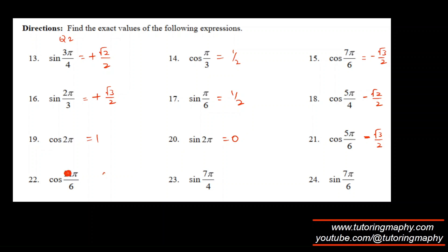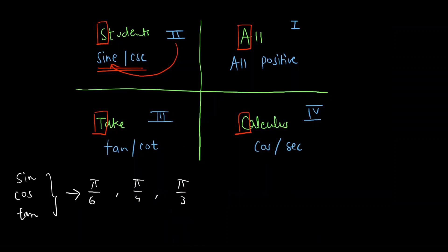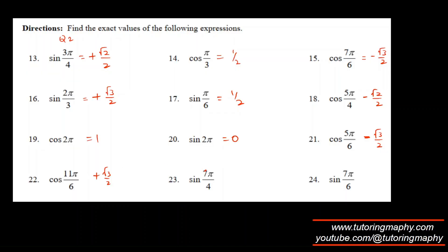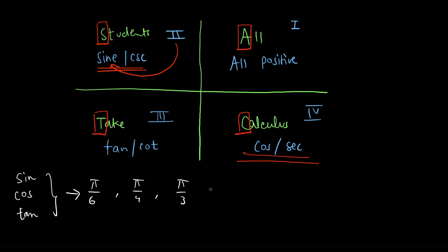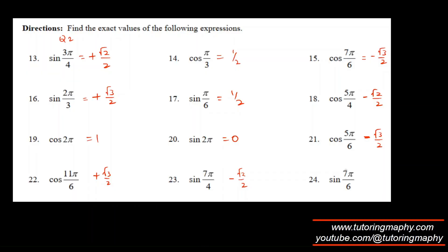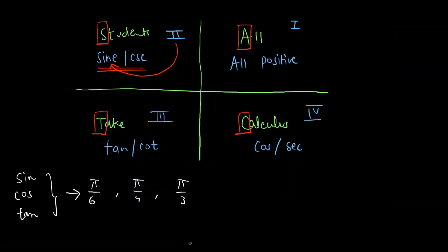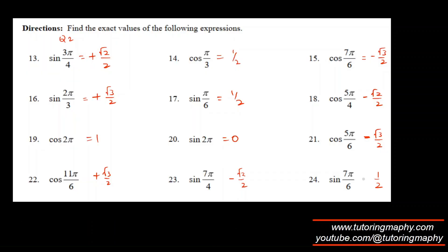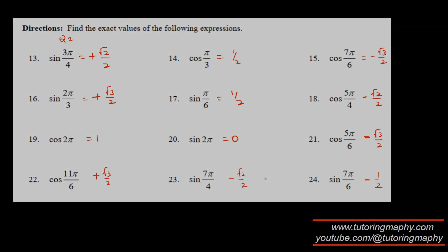cos(11π/6): cos(π/6) = √3/2. 11π/6 is in quadrant four where cosine is positive, so the answer is √3/2. sin(7π/4): sin(π/4) = √2/2, but 7π/4 is in quadrant four where sine is negative, so the answer is −√2/2. sin(7π/6): sin(π/6) = 1/2, and 7π/6 is in quadrant three where sine is negative, so the answer is −1/2.